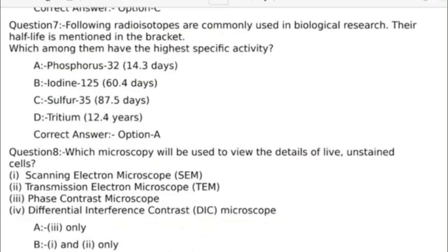Seventh question: Following radioisotopes are commonly used in biological research, with half-life mentioned in the bracket. Which among them have the highest specific activity? Correct answer: Option A, Phosphorus 32.